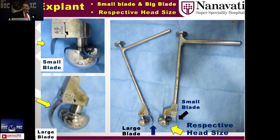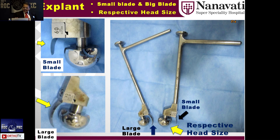For atraumatic cup removal, the best equipment is the explant system, which has two blades — short and long. First remove the poly, then remove the screws of the cementless cup, dissect and clear the margin, place the small osteotome, and revolve it around the cup. This is the best atraumatic technique; it preserves bone and everyone appreciates it.